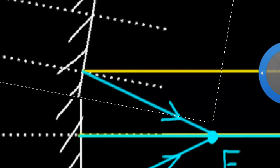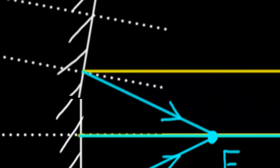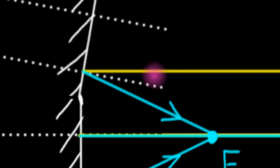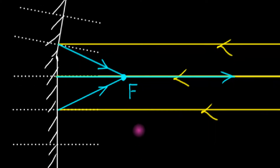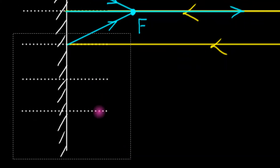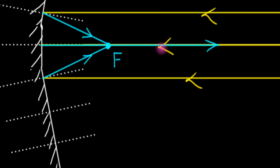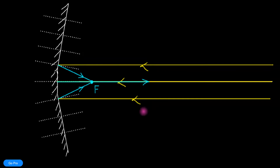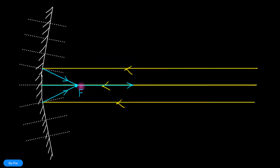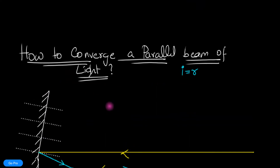Once I do that — by turning the mirror and connecting the mirrors here — notice the angle of incidence is equal to the angle of reflection. Let me do the same thing on this side. There we have it: we have now converged a parallel beam of light to a single point. That's what we wanted!